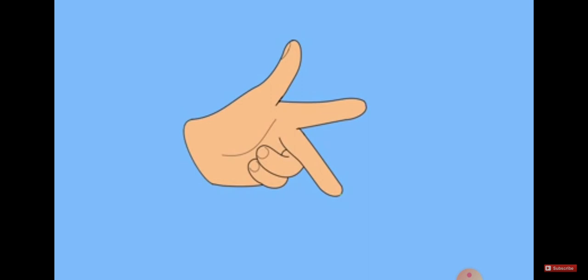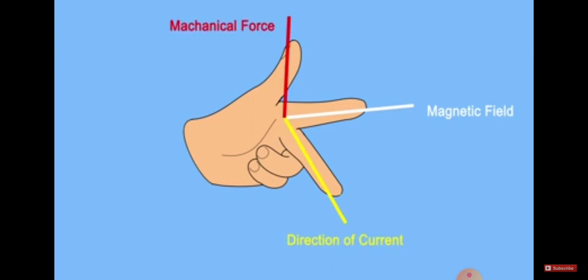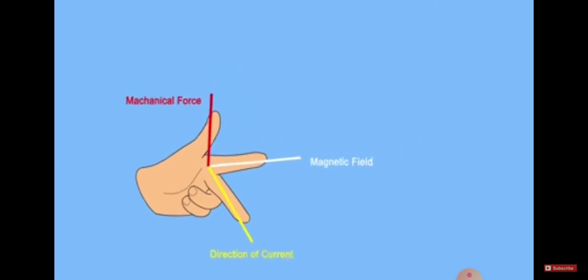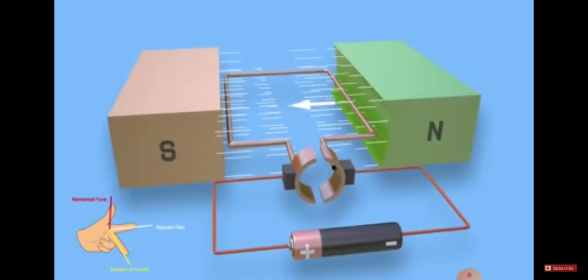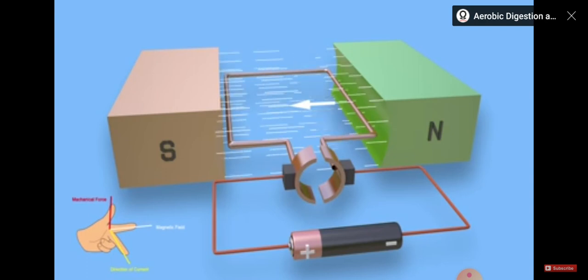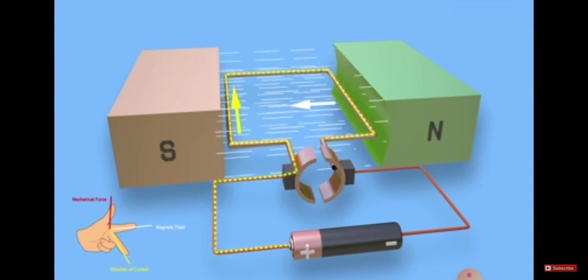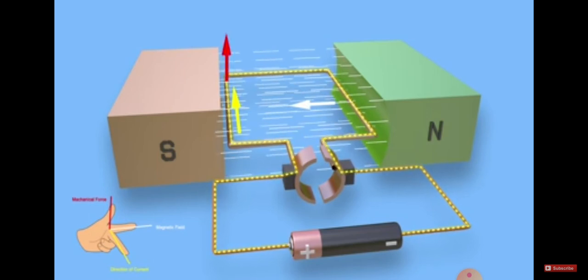Fleming's Left Hand Rule gives perpendicular directions of the magnetic field. The magnetic field direction, direction of current, and mechanical force are all mutually perpendicular. The magnetic field acts at a center point, and attraction occurs at all points of the magnetic field. You can observe the arrow symbols in the video.